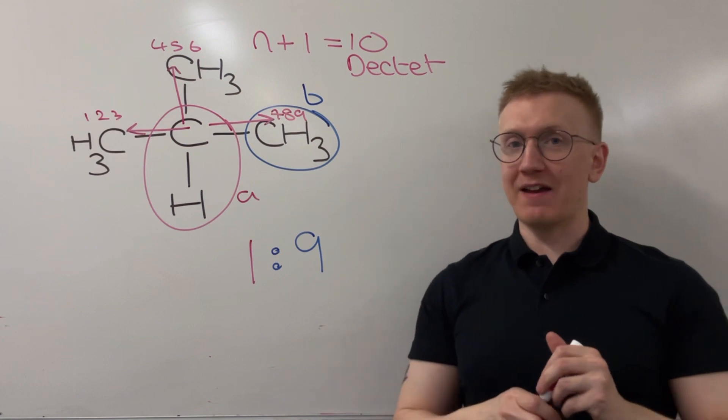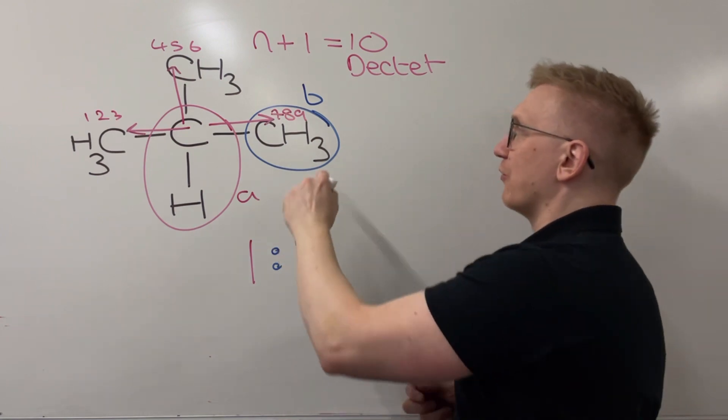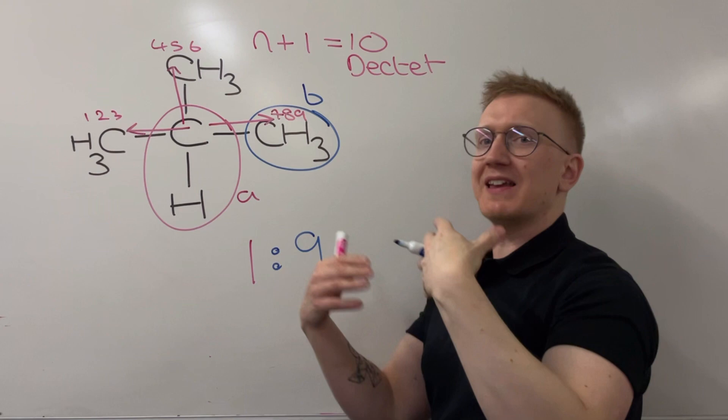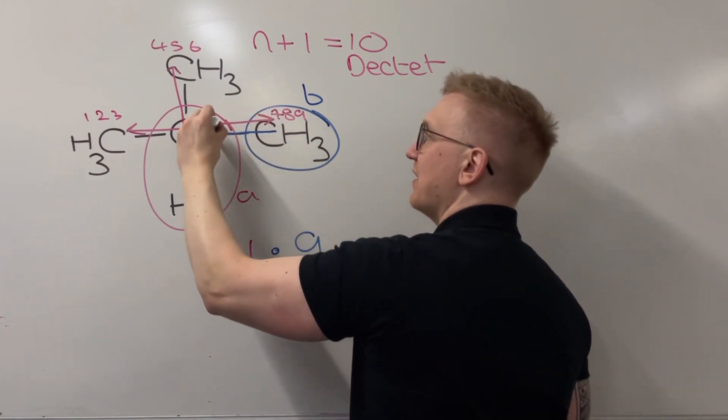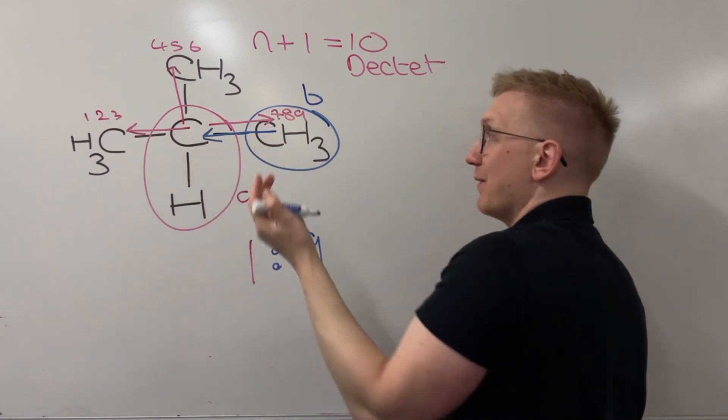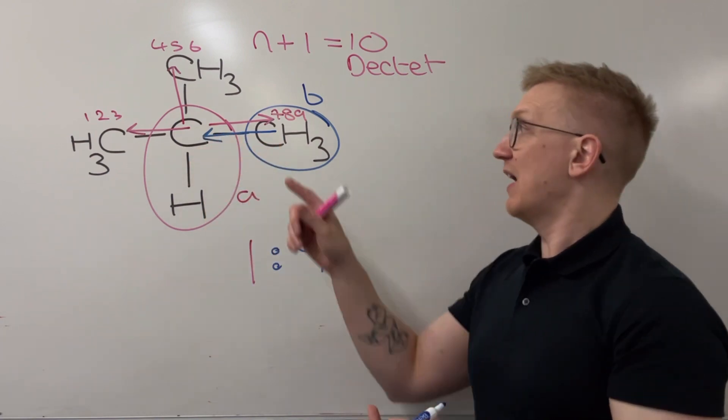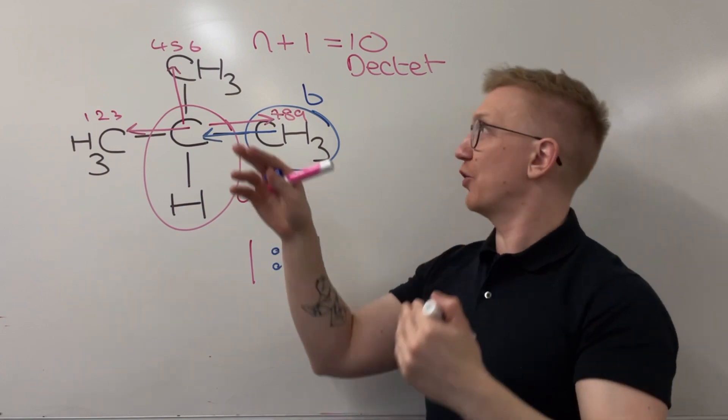So what about the other environment just here? Well, I go from one of these equivalent CH3s. I don't need to go to each one of them one at a time. I just go from one of them and I go to the next carbon up. And there is only just this one carbon, isn't there? I don't go further through that because I only go to the next one up.